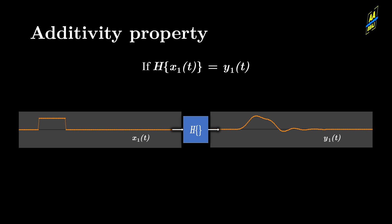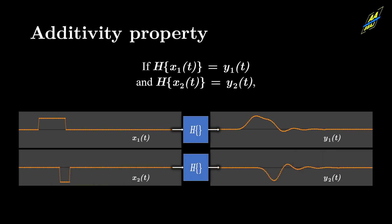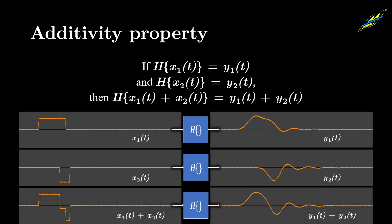The additivity property states that if we know input x1 of t produces output y1 of t, and input x2 of t produces output y2 of t, then if we input the sum of x1 of t and x2 of t, the system should produce an output with the sum of y1 of t and y2 of t.